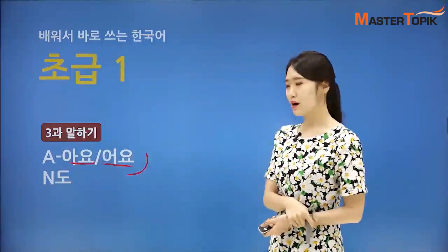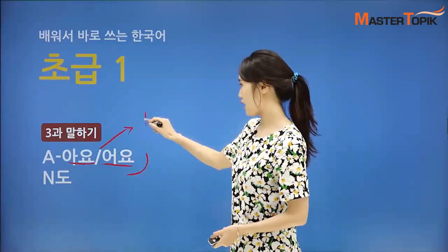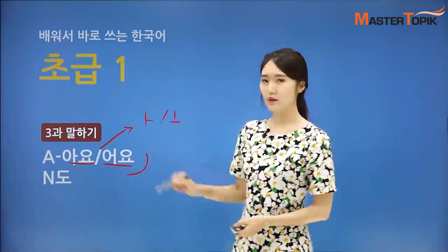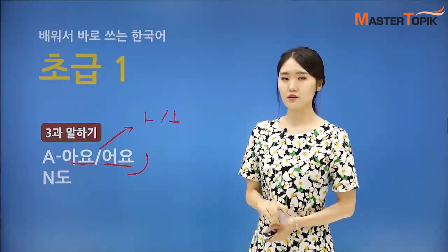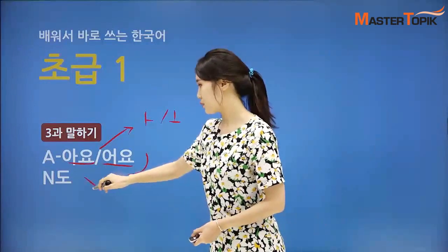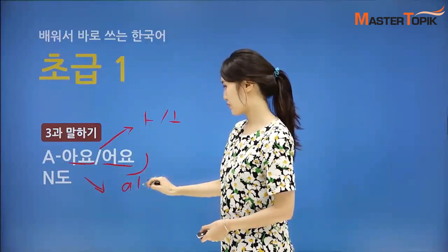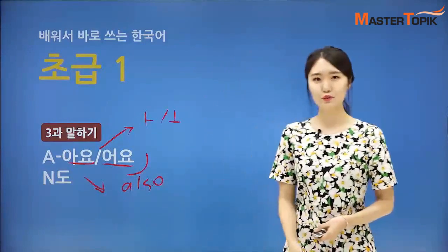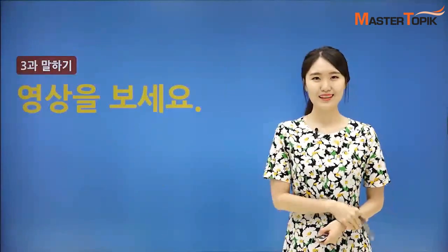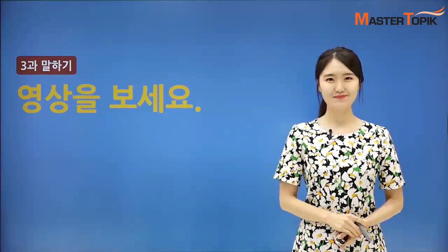So, how do you say this? 아요 is used when the vowel is 아 or 오. And 어요 is used for all the different ones. And 도 — what is 도? It means 'also.' So after now, we use 도. Let's watch the movie clip and come back.